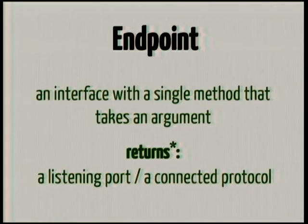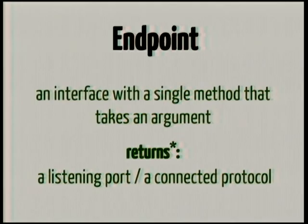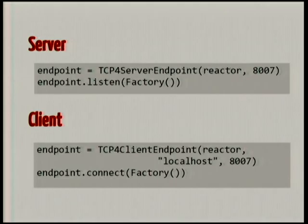Endpoints are standardized APIs for connecting clients and listening servers that basically help you write generic code that doesn't really care about how the clients are connecting or the server is listening for incoming connections. We introduced this in 2010 in Twisted. All you need to do is initialize the endpoint, create an object with whatever details it needs to establish the connection, and call a method — listen or connect, based on server or client — and it'll give you a deferred that fires with a listening port or a connected protocol.